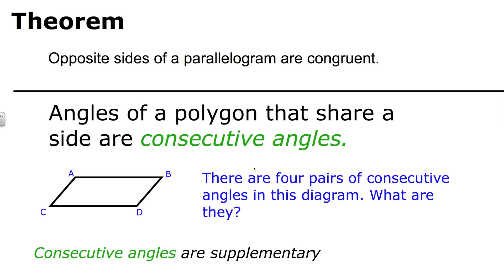The properties of parallelograms are expressed as theorems. In this particular theorem, the opposite sides of a parallelogram are congruent. You don't need to be a geometry student to understand this — the opposite sides of a parallelogram are congruent. So we know that they're parallel and we know that they are congruent.